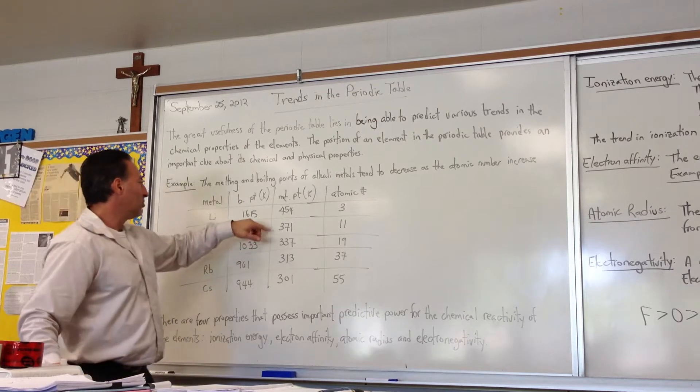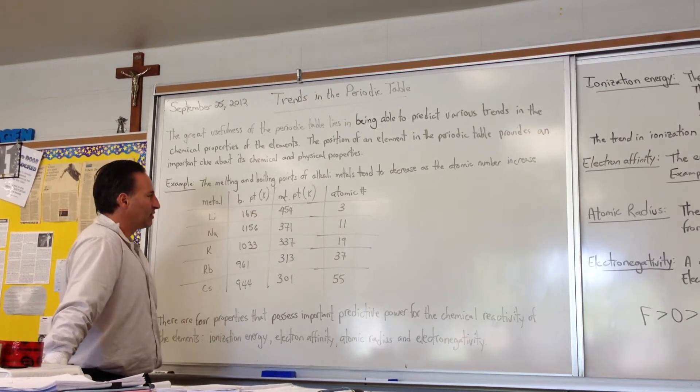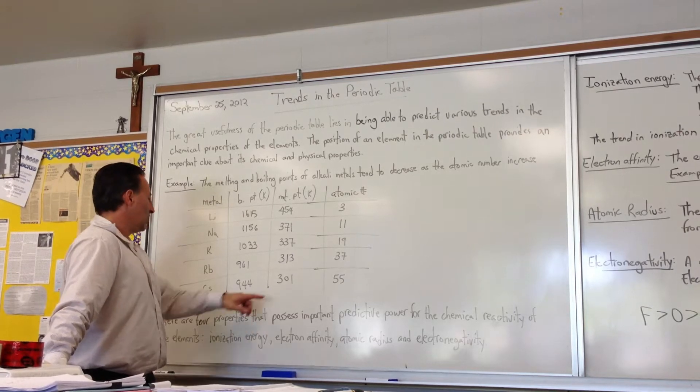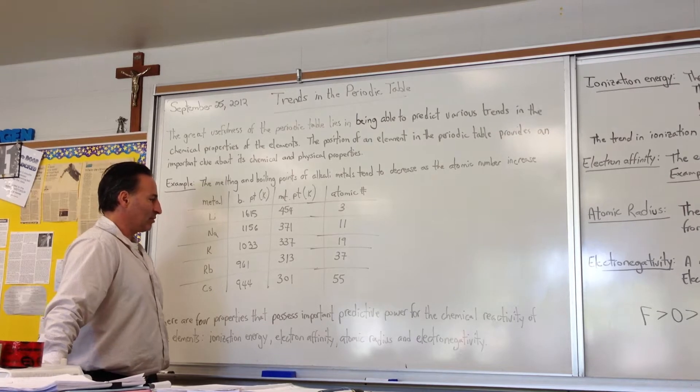Likewise, the melting points—the smallest metal, lithium, has 454 Kelvin as a melting point, whereas cesium melts at room temperature, 301 Kelvin.